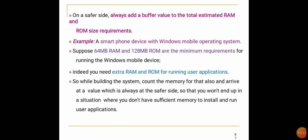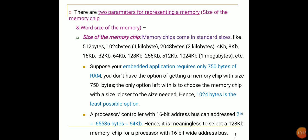While building the system, count the memory for user applications and arrive at a value on the safer side, so you don't end up without sufficient memory. Memory chips come in standard sizes: 512 bytes, 1 KB, 2 KB, 4 KB, 8 KB, 16 KB, 32 KB, 64 KB, up to 1 MB and beyond. If your application requires only 750 bytes, you must choose the next available size — 1024 bytes.